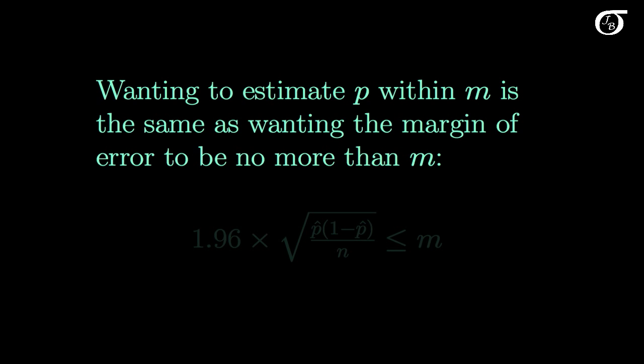Wanting to estimate P within M is the same as wanting the margin of error of the appropriate confidence interval to be no more than that amount M. This is the margin of error of a 95% confidence interval for P, and we want that to be less than or equal to this amount M.